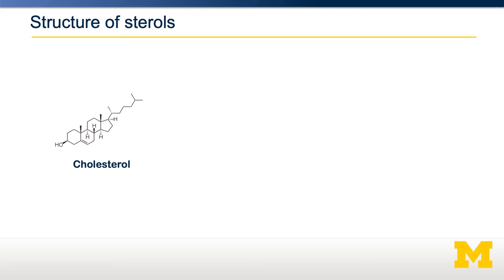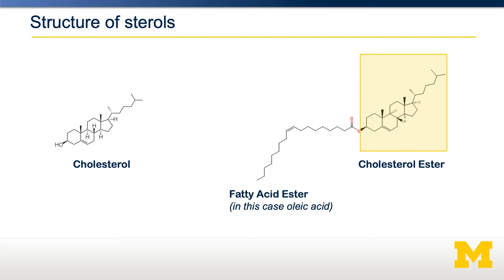Cholesterol can exist in two forms: either a free form, shown on the left — note the free hydroxyl group in the bottom left corner — or an esterified form. That means a fatty acid is now conjugated to that free hydroxyl group. In this case, I'm showing you the fatty acid oleic acid. When cholesterol is esterified, it has different properties. It is much less soluble, and is also difficult for us to absorb without breaking off that fatty acid chain.